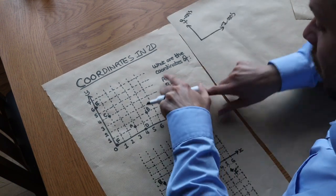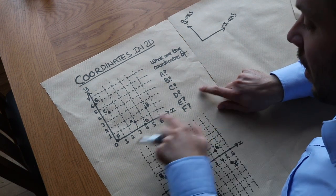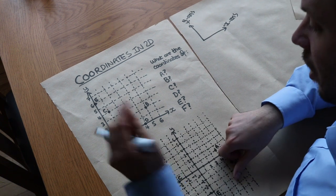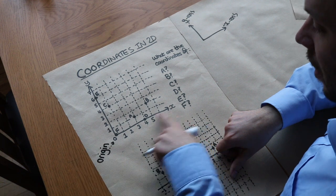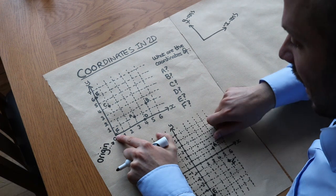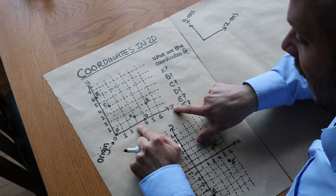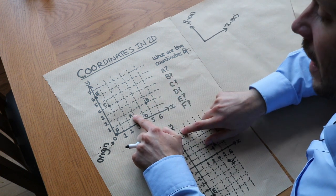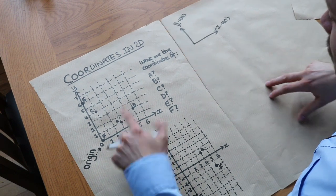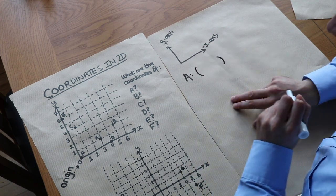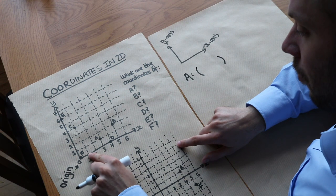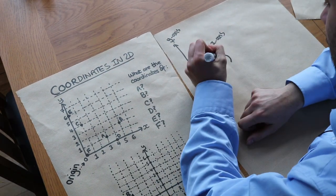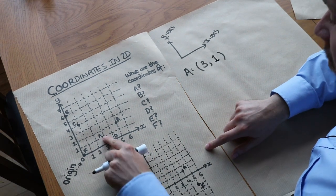If we take the coordinate of A — the coordinate just means the position of a particular point — we start at what's called the origin, where the x and y-axes begin. To get to A, we go three positions across the x-axis in the x-direction, then we go one position up in the y-direction. We write A in brackets with the x-movement first: three across, comma, one up — so the coordinate of A is (3, 1).